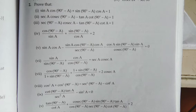Now, number 6: looking at the expression, finding the LCM, applying sin square A plus cos square A equals 1, and using reciprocal relationships to reach the right hand side.